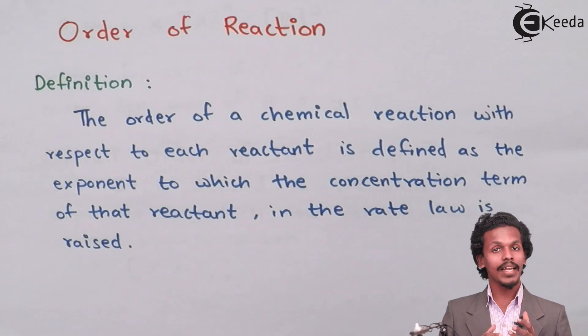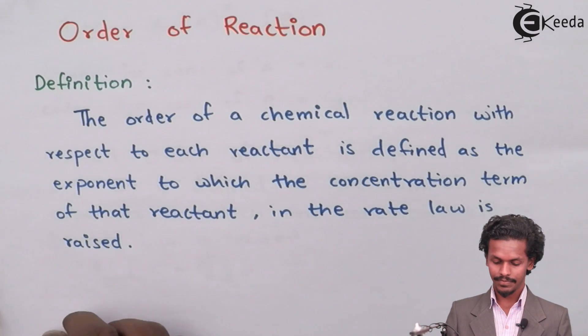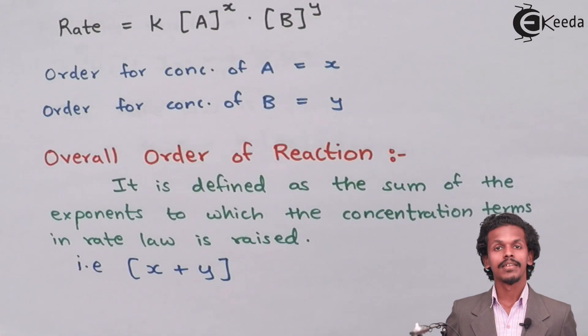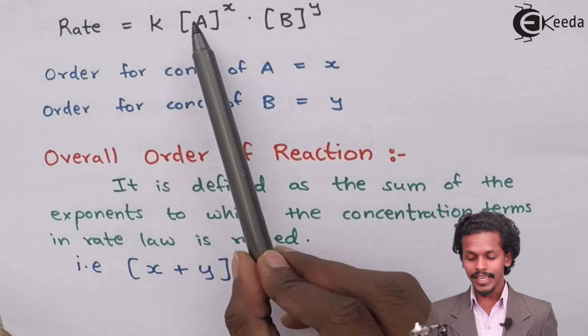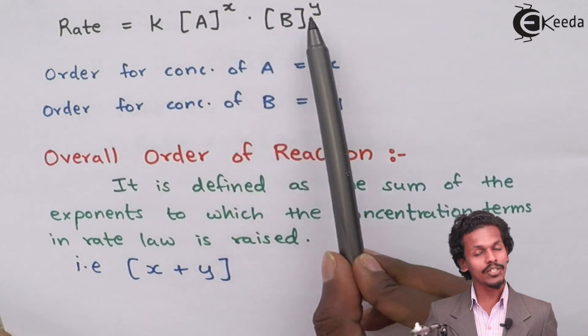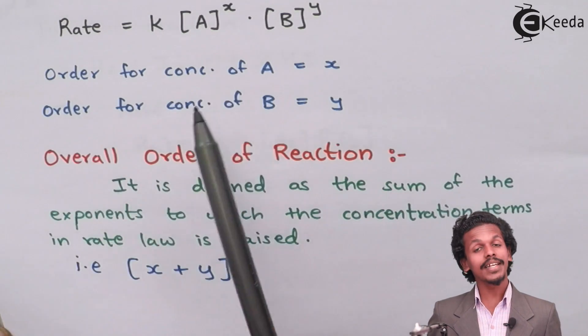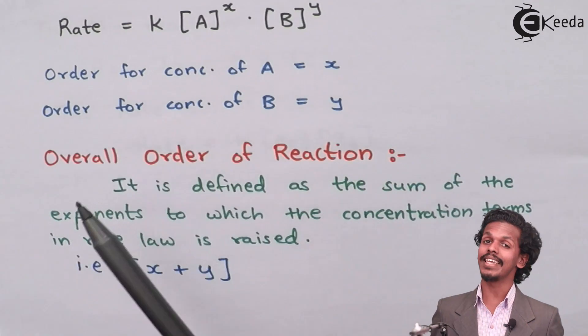So based on that, we will study what is order of reaction. According to rate law, the rate is equal to K times A raised to X and B raised to Y.